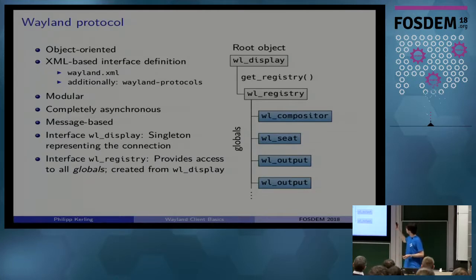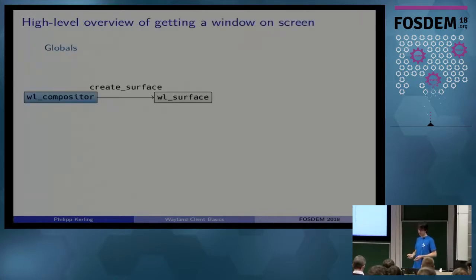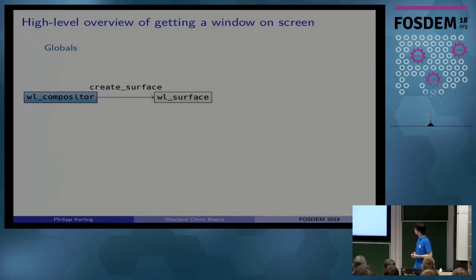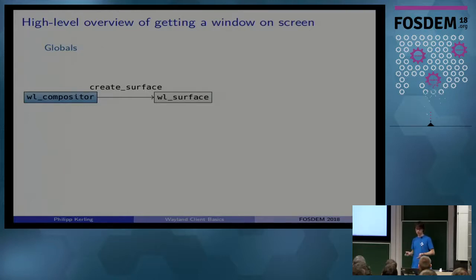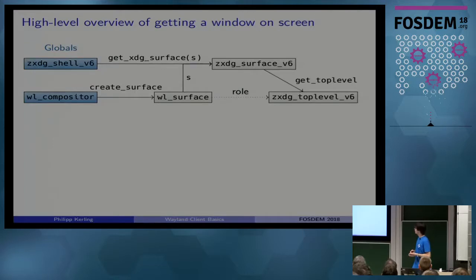How do you use those globals to actually get a window on screen? First, you use the compositor global to create a surface — a rectangular area of pixels that you can put some content in. But if you just create a surface, it won't be displayed, because all surfaces need a role — exactly one role that tells the compositor what it should do with the surface and how to display it. If you want a regular window on a desktop, there's an extension protocol called xdg_shell.